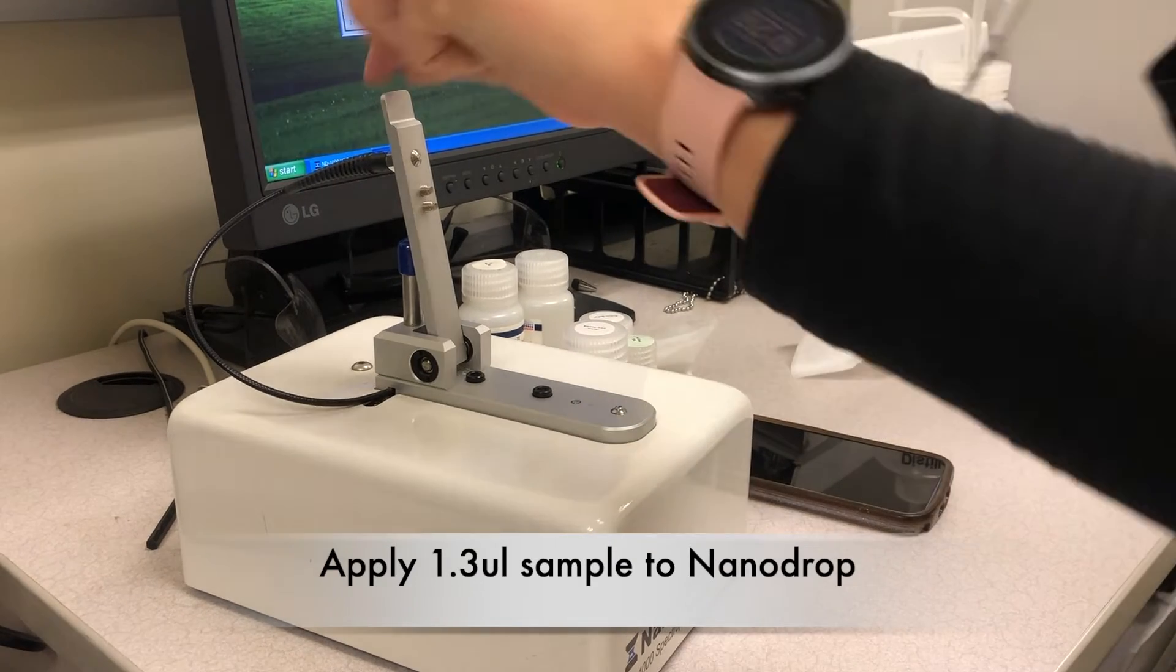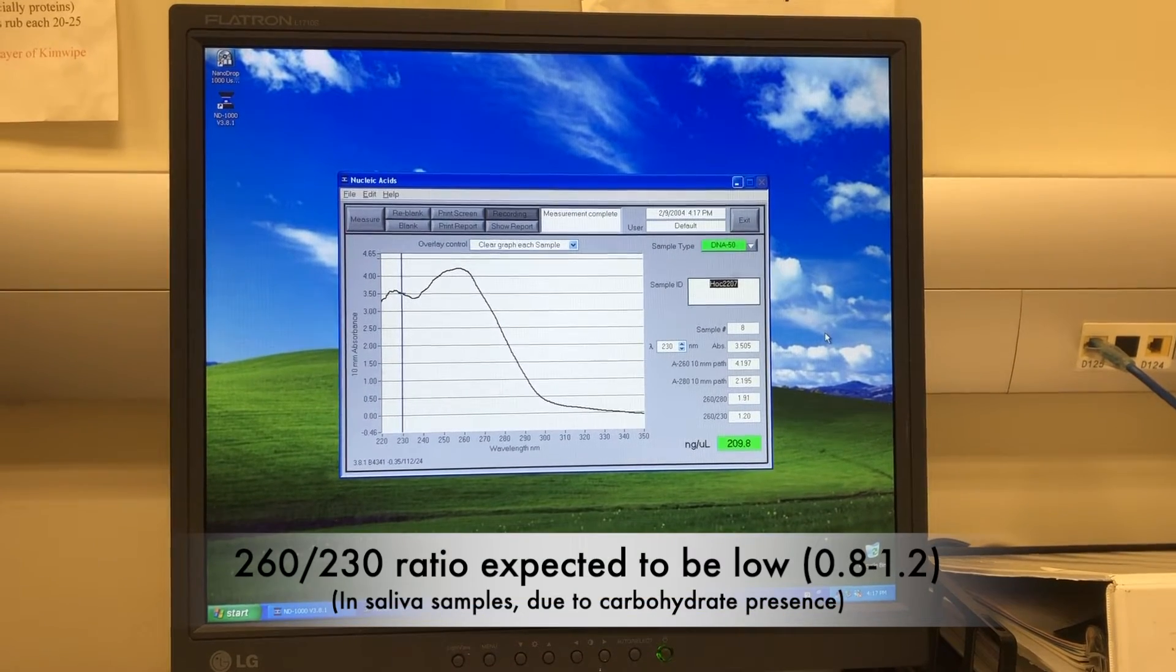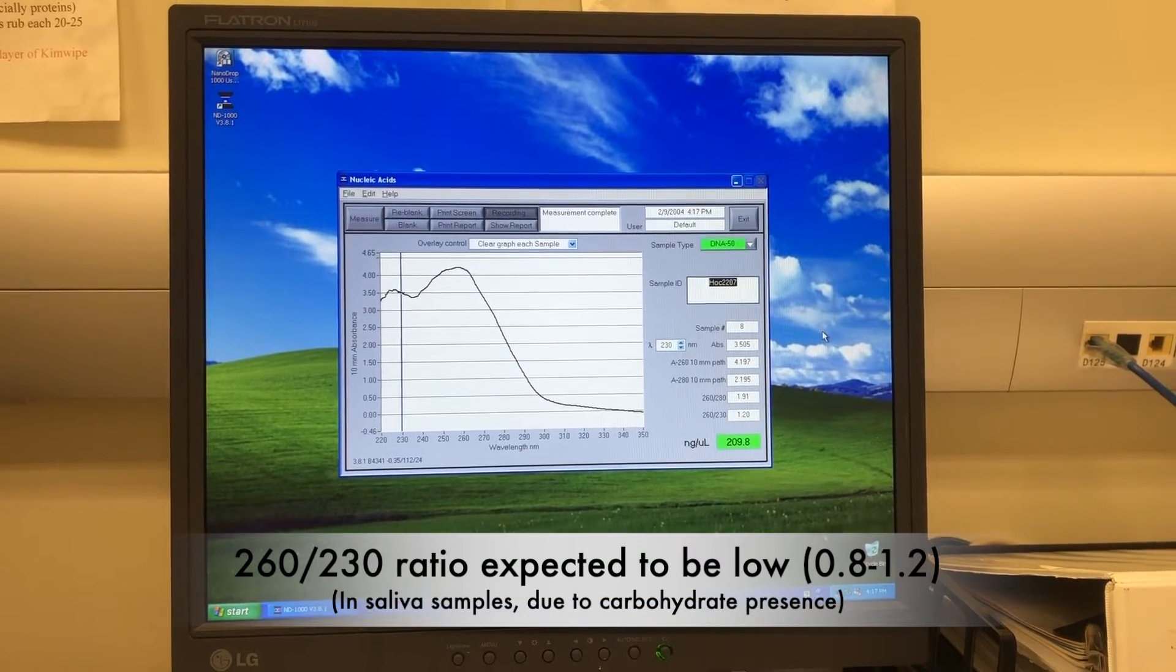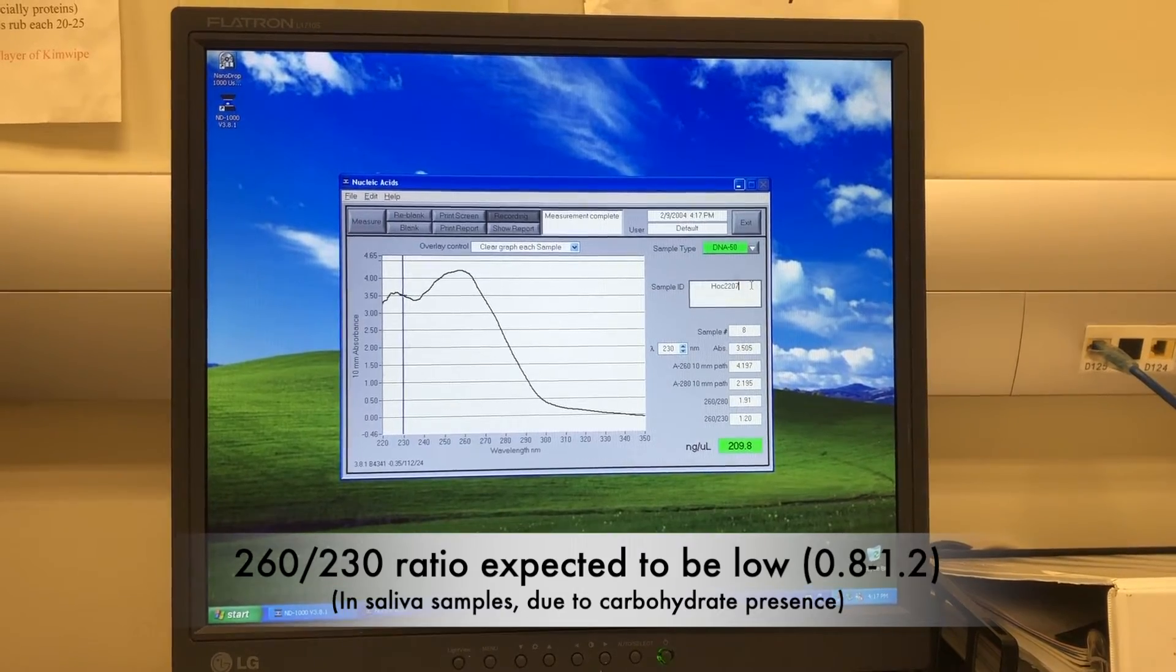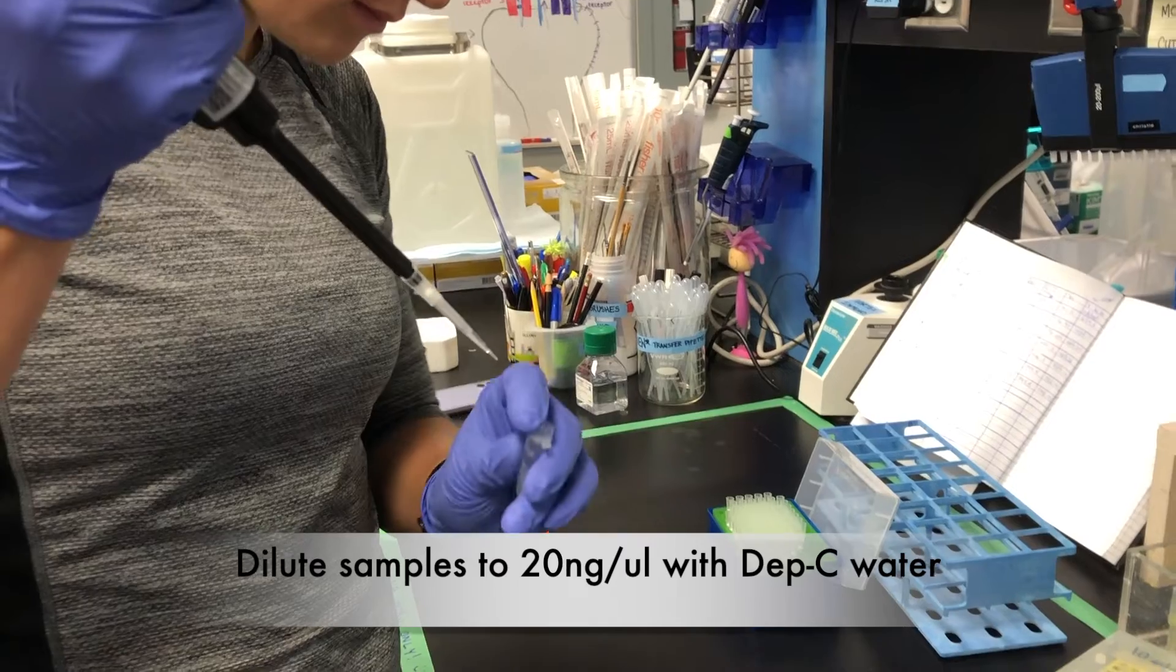Measure sample quality and concentration using the NanoDrop. It is expected the 260-230 ratio will be lower than standard, due to the presence of carbohydrates in saliva. Dilute each sample to 20 ng per µL using Depsy water.